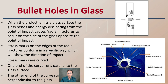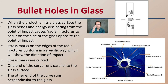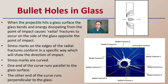When we have a bullet hole in glass, the projectile hits the glass surface, the glass bends, and energy dispersing from the point causes radial fractures to occur on the side of glass opposite the point of impact. Here's a prime example: a vertical piece of glass with a bullet traveling from the left side to the right. The stress marks on the edges of the radial fracture form in a specific way that shows the direction of impact. Stress marks are curved — one end of the curve runs parallel to the glass surface, the other end runs perpendicular.